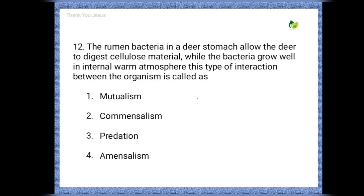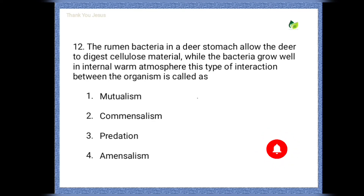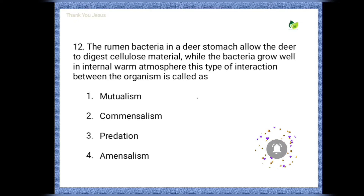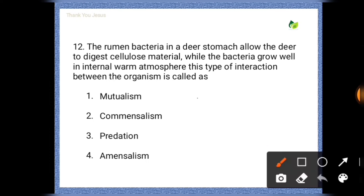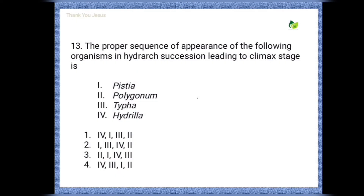Next question: The rumen bacteria in a deer's stomach allow the deer to digest cellulose material, while the bacteria grow well in the internal warm atmosphere. This type of interaction between organisms is called — options are: mutualism, commensalism, predation, amensalism. The correct option is mutualism.